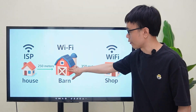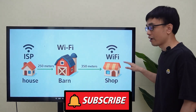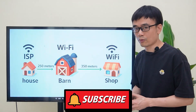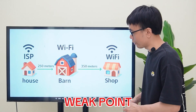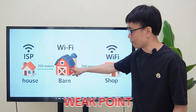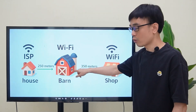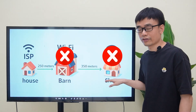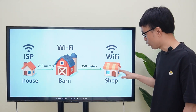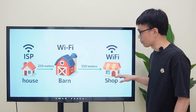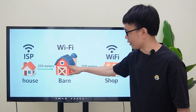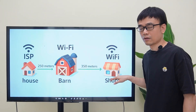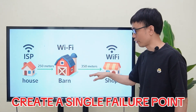The plan is simple and straightforward, but there is a weak point: the device in the barn. If the device in the barn fails, then the shop will lose network connectivity, since all the data needs to pass through the device in the barn before it reaches the shop. This creates a single point of failure.